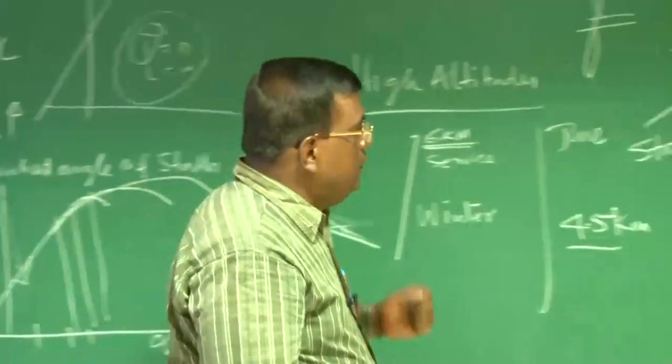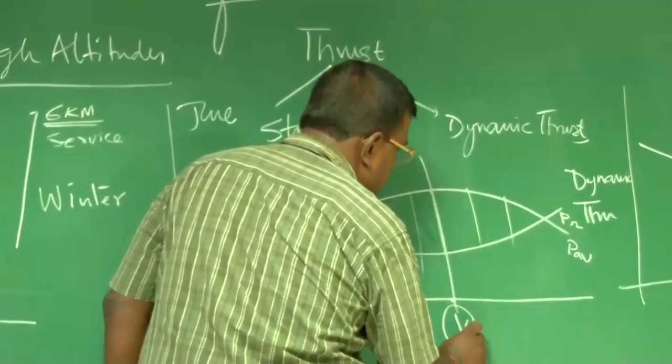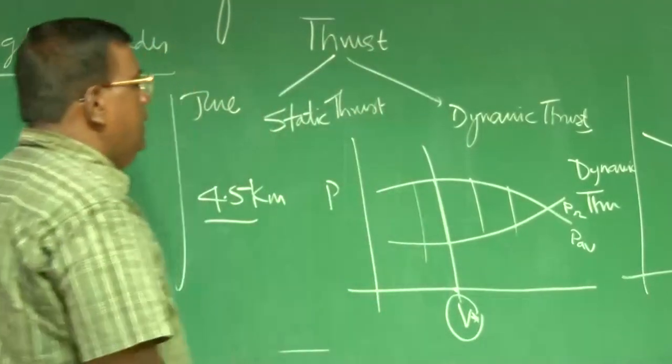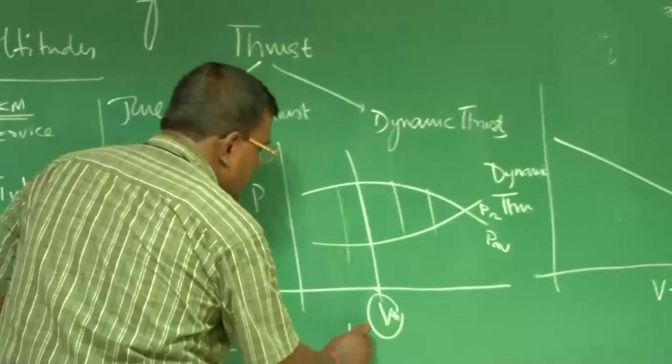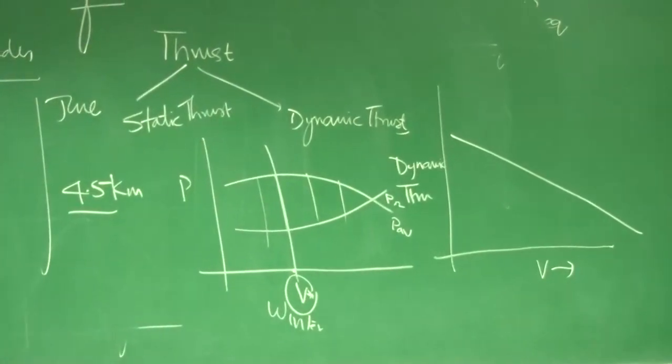And also, you could see, if I was getting a particular rate of climb at this V. This is very important. In winter. Right? Say at 6 kilometer.